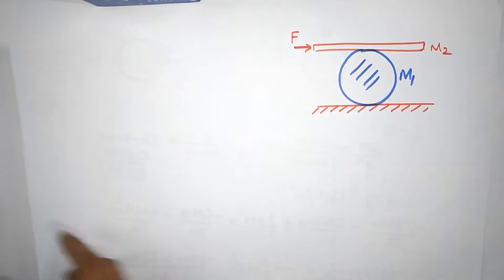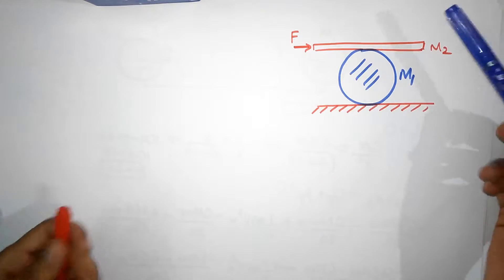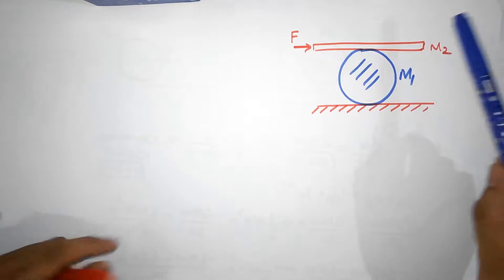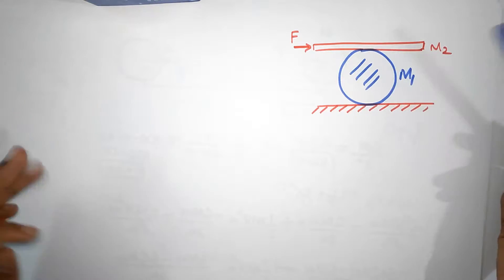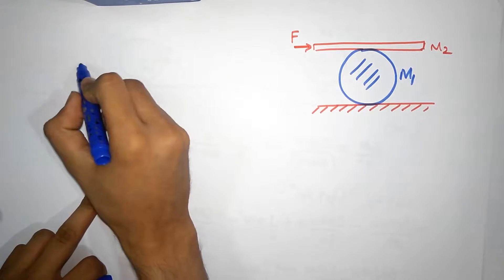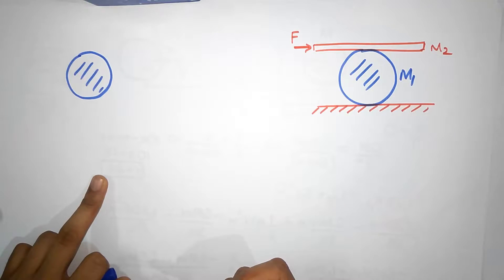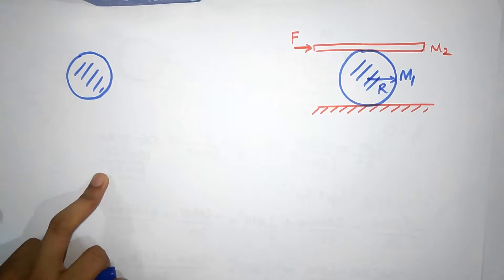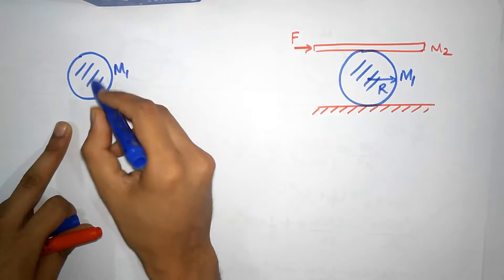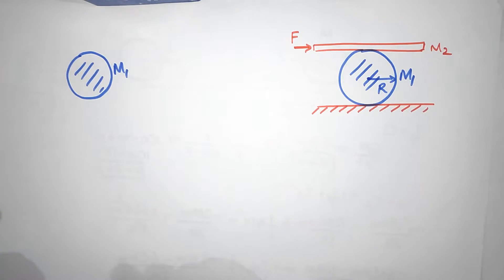We're going to write equations using Newton's second law and the torque equation: F equals ma, and tau equals I*alpha. We'll apply these separately to the cylinder and the plank. The cylinder has some radius r and mass m1. Now, take a moment to think about what direction the frictional forces are going to be.